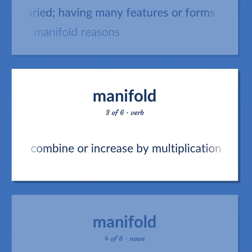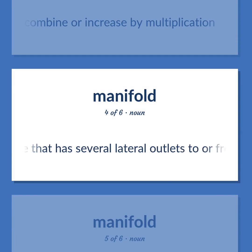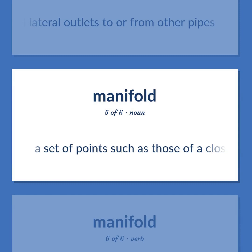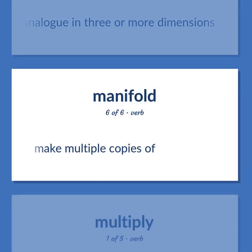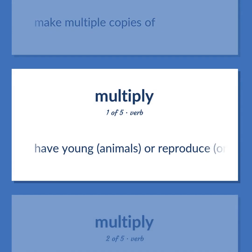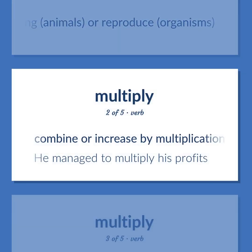Manifold: Combine or increase by multiplication. A pipe that has several lateral outlets to or from other pipes. A set of points such as those of a closed surface or an analog in three or more dimensions. Make multiple copies of. Have young (animals) or reproduce (organisms). Combine or increase by multiplication. Example: He managed to multiply his profits.